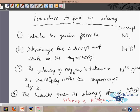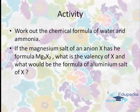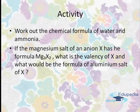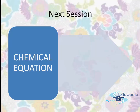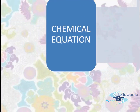I hope you have gone through the steps — you can also try by yourself. Here is a small activity: work out the chemical formula of water and ammonia. In the second question, if the magnesium salt of an anion X has formula Mg₃X₂, what is the valency of X and what would be the formula of the ammonium salt of X? In the next session we will be meeting with chemical equations. Thank you.